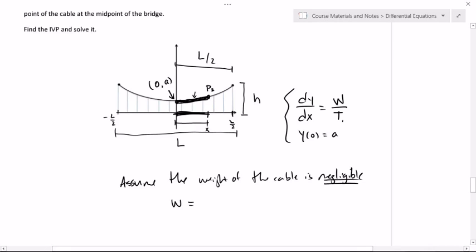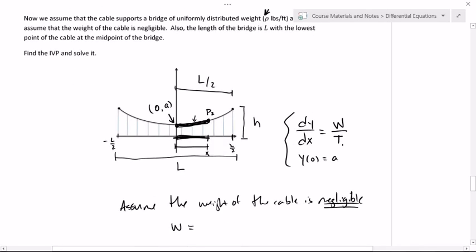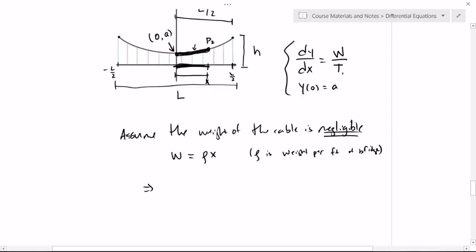Now, since they tell us that the weight is uniformly distributed at rho pounds per feet, then the weight of this, if it's a length of x feet, is going to be rho times x. Rho is weight per foot of bridge. So now what I've got is dy dx equals rho x over t1, which is a very simple, separable problem to solve.